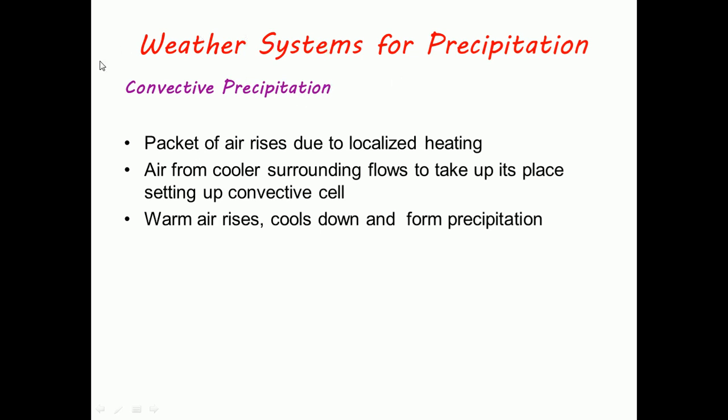The next weather system is convective precipitation. Here, the packet of air rises due to localized heating. Air from the cooler surrounding flows to take the place of warm air and sets up the convective cell.